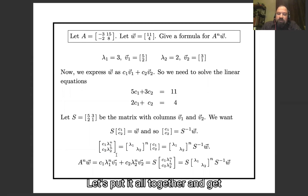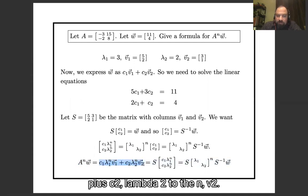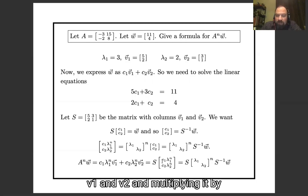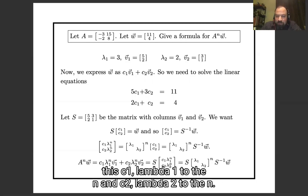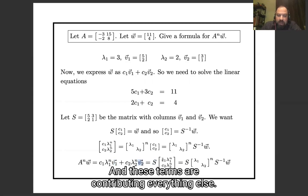Okay, let's put it all together and get back to our final answer. We know Aⁿw is going to be c₁λ₁ⁿv₁ plus c₂λ₂ⁿv₂. We can get that by taking the matrix S whose columns are v₁ and v₂ and multiplying it by this [c₁λ₁ⁿ, c₂λ₂ⁿ]. So this S is contributing the v₁ and the v₂, and these terms are contributing everything else.